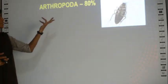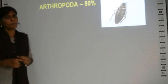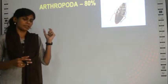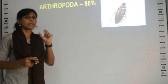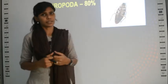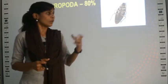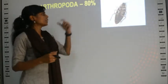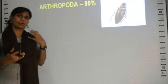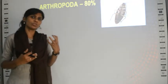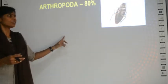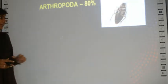The next group is Arthropoda. An example is the cockroach. 80% of the animal groups in the world come under the group called Arthropoda - it is a very large group.